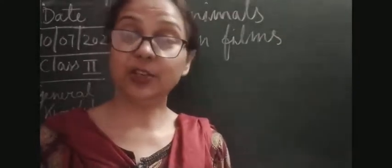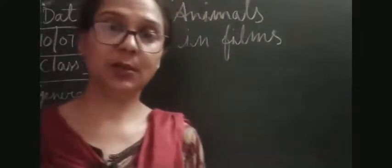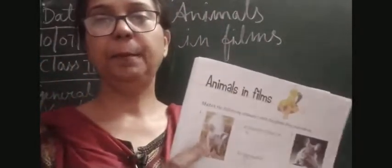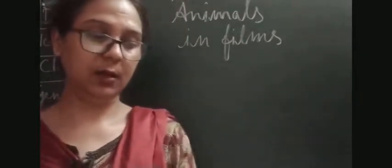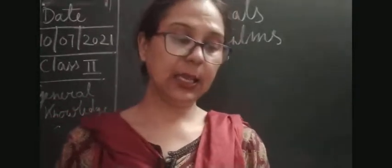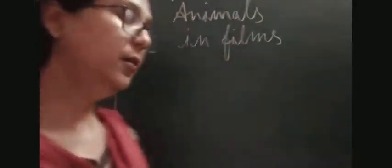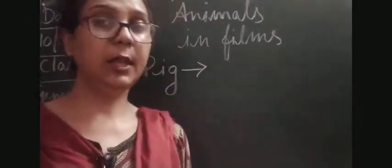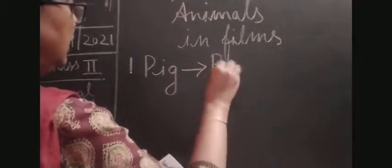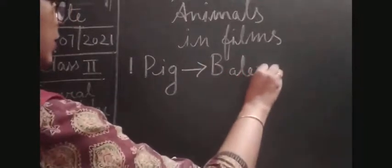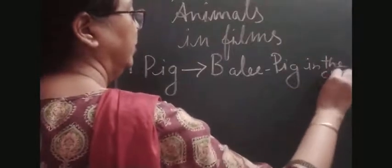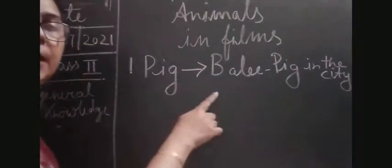I will show you some images from inside those films. The first picture shows a pig, which you can find in option D — Babe: Pig in the City. The pig played the main lead role in this film, which is why the film is named Babe: Pig in the City.